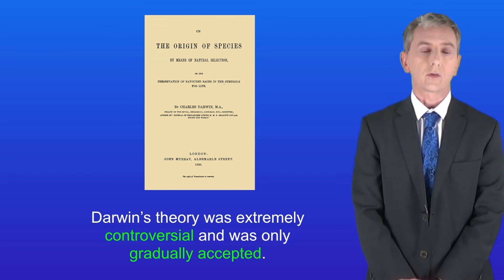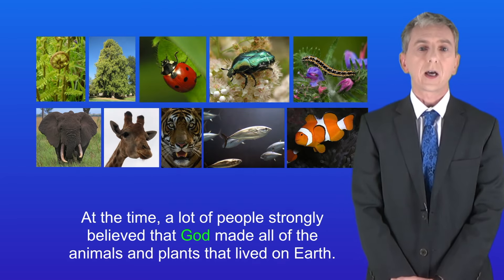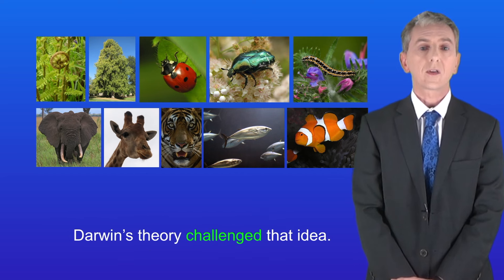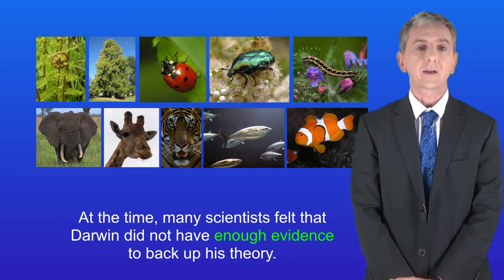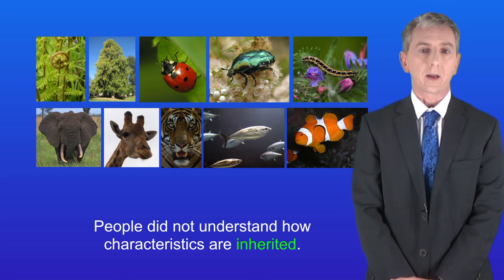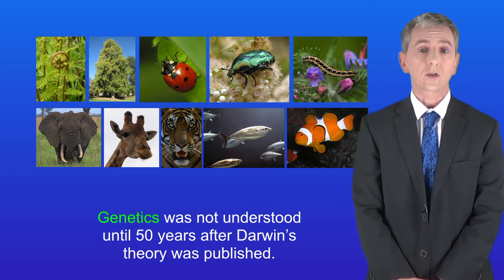Darwin's theory was extremely controversial and was only gradually accepted. At the time a lot of people strongly believed that God made all of the animals and plants that lived on earth, and Darwin's theory challenged that idea. Secondly, many scientists felt that Darwin did not have enough evidence to back up his theory. And finally, people did not understand how characteristics are inherited — in fact genetics was not understood until 50 years after Darwin's theory was published.